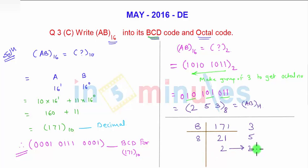So this 2 is your MSB part and 3 is the LSB part. Writing from bottom to top you get 253 as the octal code for 171 decimal.